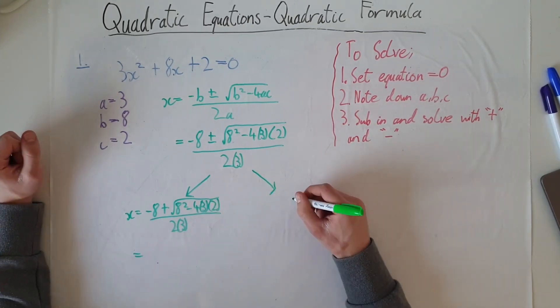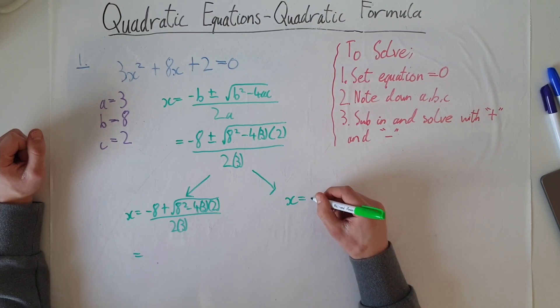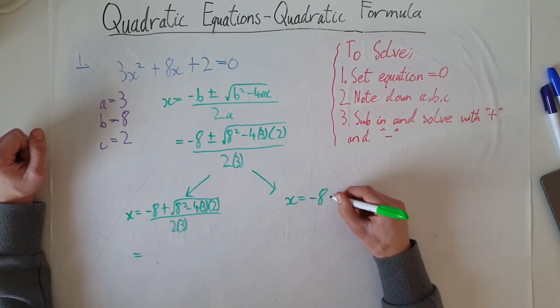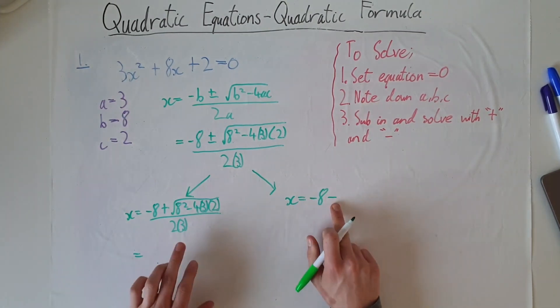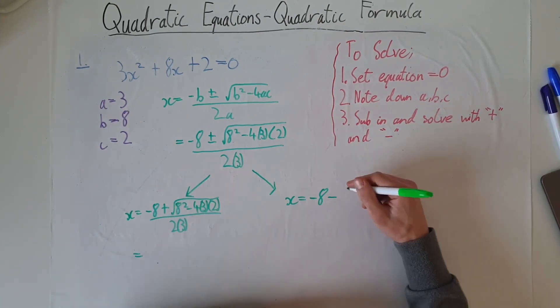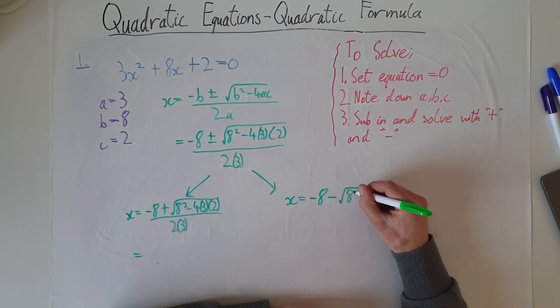And then on the right-hand side, we have x equals negative 8 minus - so this is the difference, positive here and minus here, first root, second root - to give us, and then it's just the same, everything else.